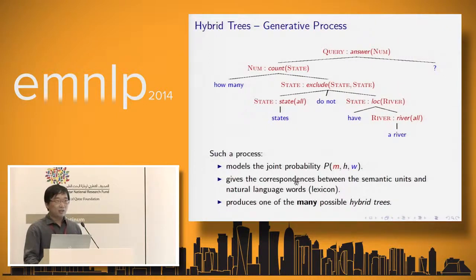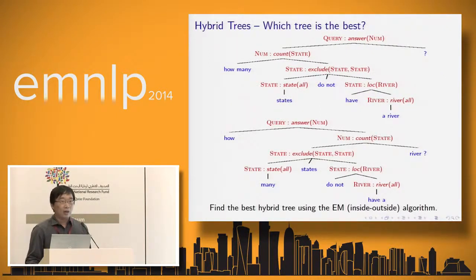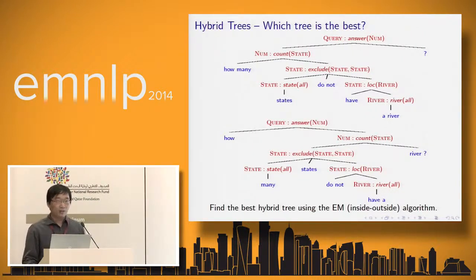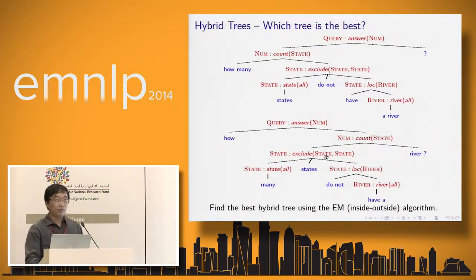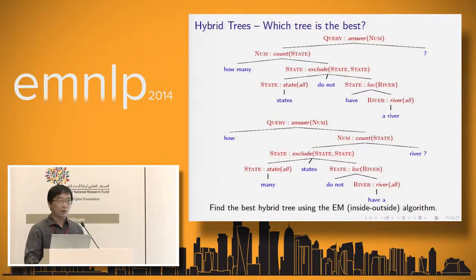This is just one way to produce a hybrid tree. For a given natural language sentence and semantic pair, there exist many possible hybrid trees. So how do we find the most probable hybrid tree? In practice, we use the EM algorithm to figure out the most probable hybrid tree for a sentence-semantics pair.